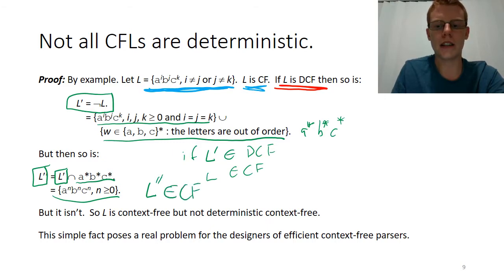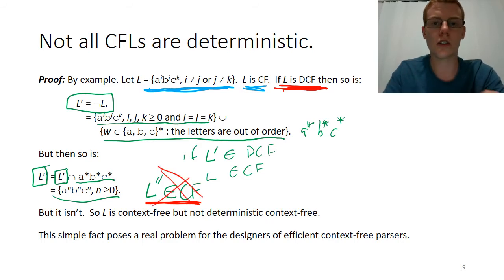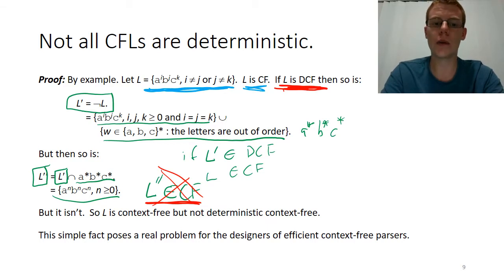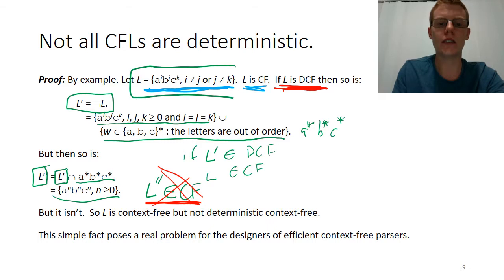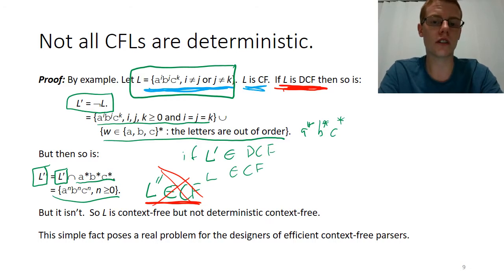The problem is that our assumption has led us to the conclusion that A^N B^N C^N is context-free. However, we know that's not the case — that's a contradiction. Therefore, L must not be deterministic context-free. However, we showed that it is context-free. So now we have this language which is context-free but not deterministic context-free, and therefore the context-free languages are a strictly larger set than the deterministic context-free languages.